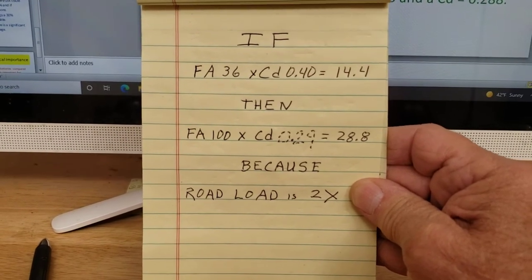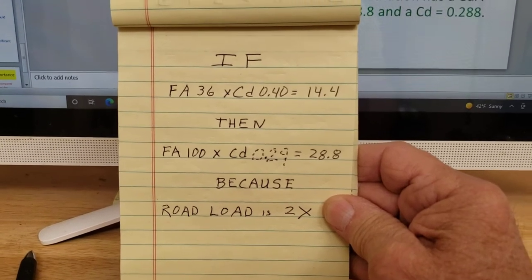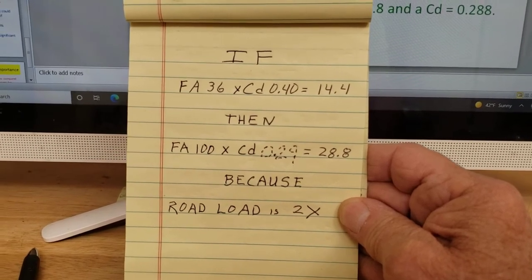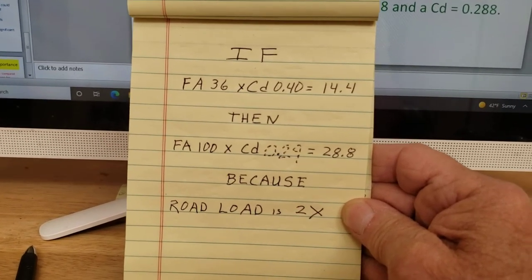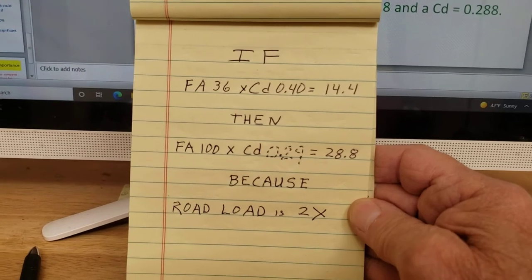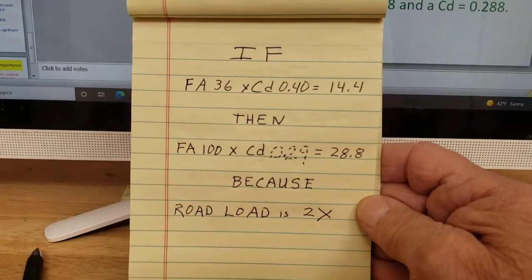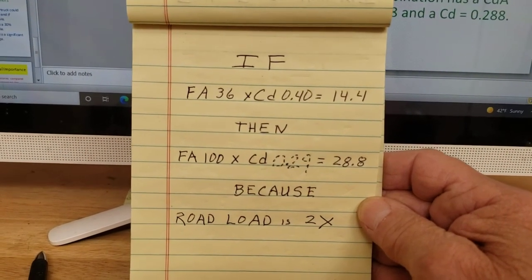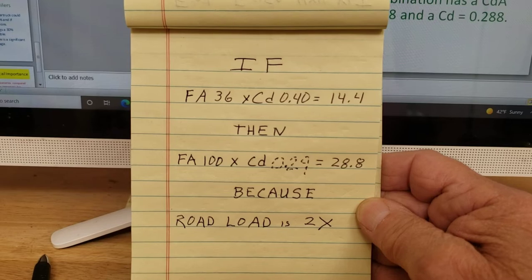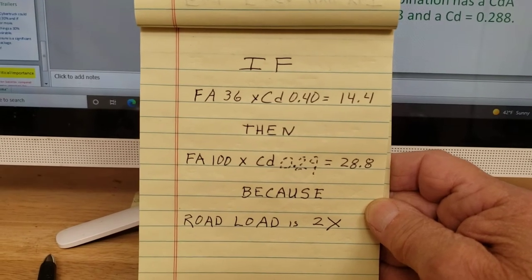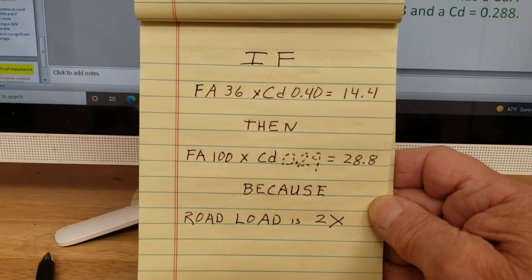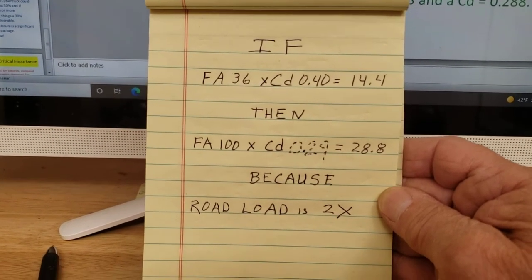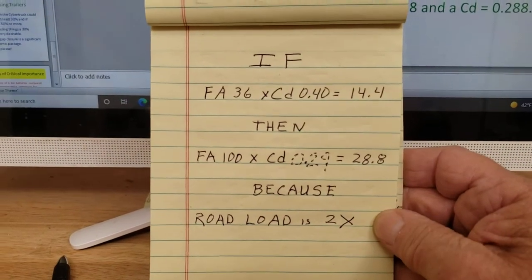Then the CdA, which I don't label here because I don't have room, is 14.4. Then if my frontal area is 100 times my Cd, which I don't know, equals 28.8. And as you can see, 28.8 is twice 14.4. Well then, my coefficient of drag has to be 0.29, and this is because the road load is 2x.